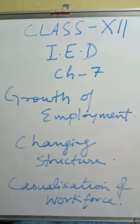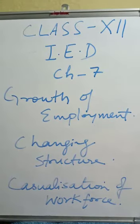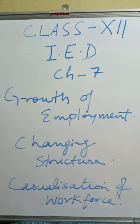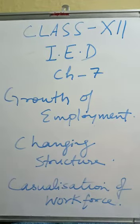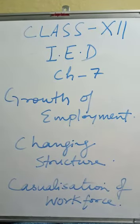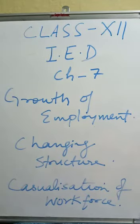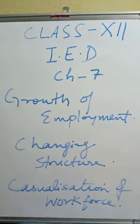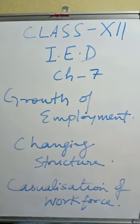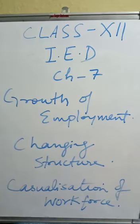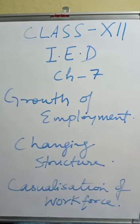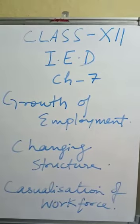Now, the changing structure of employment. We know India is an agrarian nation. A major section of our population lives in rural areas and is dependent on agriculture as their main livelihood. Development strategies in many countries including India have always aimed at reducing the proportion of people depending on agriculture. In 1972-73, 74.3% of the workforce was engaged in the primary sector, which declined to 60% in 1999-2000, showing a sustainable shift from farm to non-farm work.